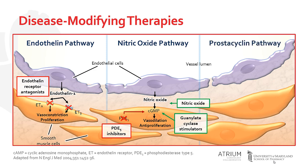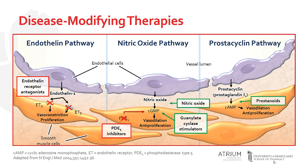Lastly, the prostacyclin pathway involves the production of prostacyclin, another endogenous vasodilator and antiproliferative that exerts its activity via enhanced cyclic AMP concentrations. Prostanoids, such as epoprostenol or treprostinil, may be used to augment this pathway in patients with PAH.